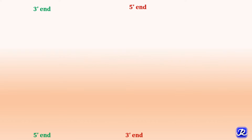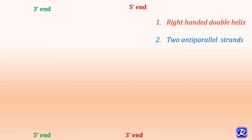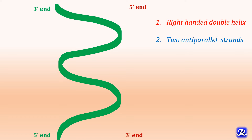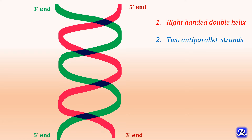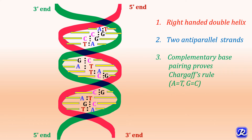Now let's study in detail the Watson and Crick model of DNA. The double helix structure of DNA is right-handed and has two anti-parallel strands — one strand runs in the 3' to 5' direction and the other runs in the 5' to 3' direction. Both strands are complementary to each other: adenine pairs with thymine and guanine pairs with cytosine. Thus, the base sequence of one strand defines the base sequence of the other strand. Because of this specific base pairing, the amount of A equals T and the amount of G equals C, meaning total purines equal total pyrimidines. This complementary base pairing proves Chargaff's rule.